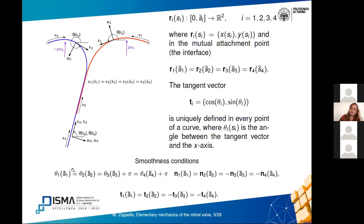The angle θ_i satisfies a smoothness condition since we are looking for a smooth solution. This smoothness condition states that at the interface point s̄, the angles formed by the tangent vectors of the first two rods should be equal, and also equal to the angles of the other two rods plus π, because the orientation of the normal frame attached to the last two rods has the opposite orientation at the contact point. This is also encoded by smoothness conditions on the normal and tangent vectors along each curve.